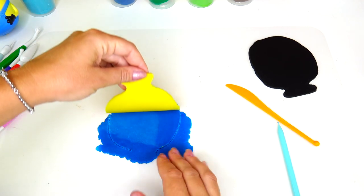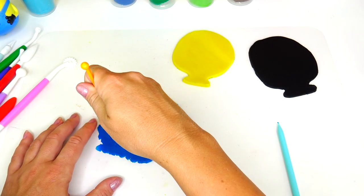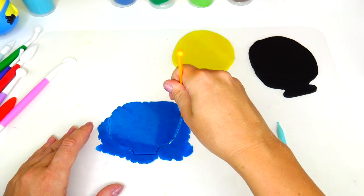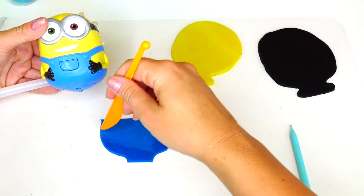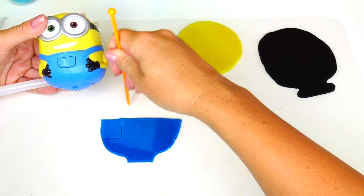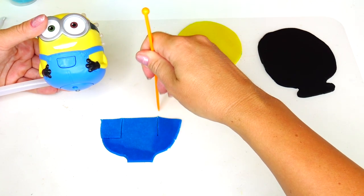Now removing the yellow part and cutting out the shape of overalls. We need to cut out a few more areas right here going up, same on the right side.